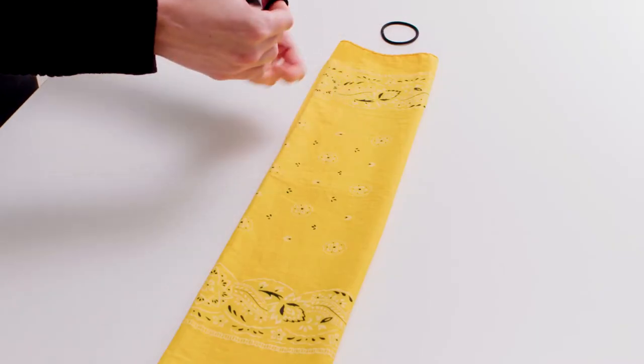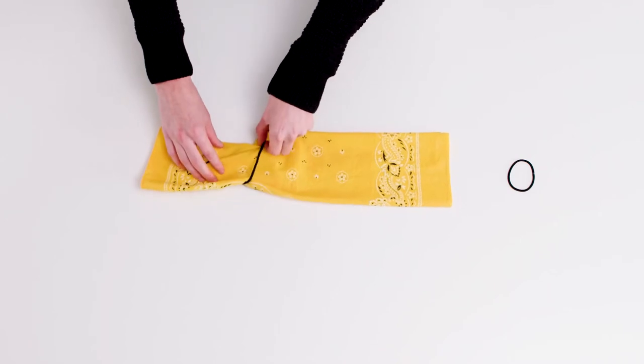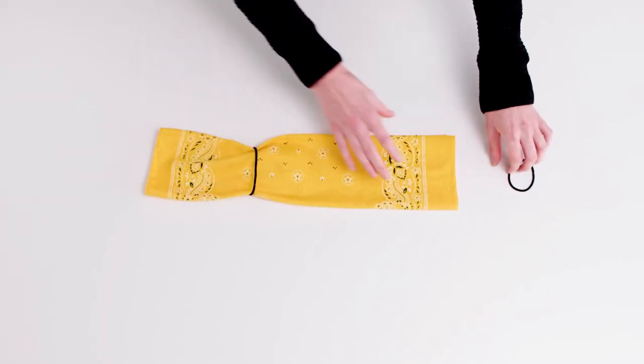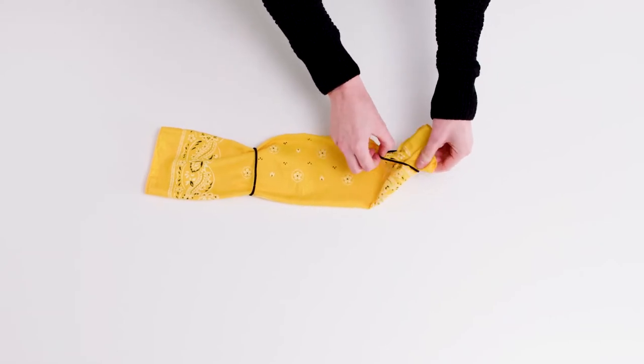Take one of the hair ties or rubber bands and wrap around the cloth, pulling it through the center of the hair tie or rubber band. The hair ties or bands should be about 6 inches apart.